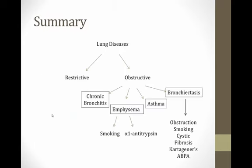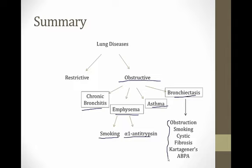To finish, a summary of obstructive lung disease. There are four causes: chronic bronchitis, emphysema, asthma, and bronchiectasis. Most emphysema is from smoking, but there is a rare subtype caused by deficiency of alpha-1 antitrypsin. There are a number of causes of bronchiectasis, including obstruction from tumors, smoking, cystic fibrosis, Kartagener syndrome, and allergic bronchopulmonary aspergillosis. That concludes our module on obstructive lung disease.